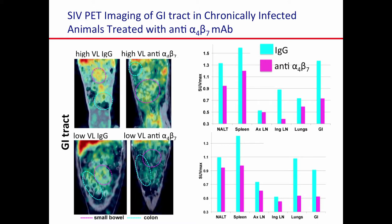Now let's go on to chronic infection and looking at virus. What I'm showing you here are matched pairs of animals — one pair with high viral loads and one with low viral loads. It really doesn't matter whether it's high or low viral load: in both instances, you see that the anti-alpha 4 beta 7 antibody is able to significantly reduce the signal — the GP120 — in the colon and in the small bowel.